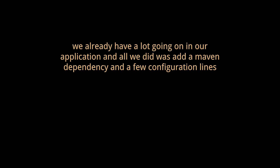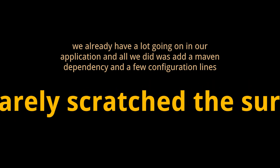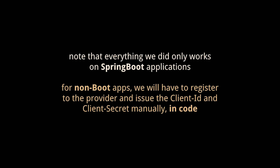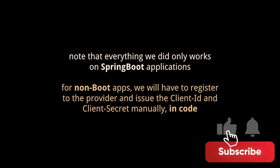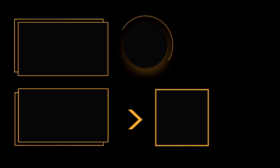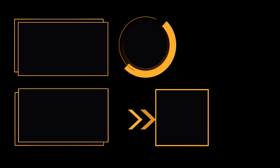We already have a lot going on in our application, and all we did was add a Maven dependency and a few configuration lines — so there is a lot we haven't covered yet and we've barely scratched the surface. Also note that what we did today works only on Spring Boot applications; for non-Boot apps we will have to register to the provider and issue the client ID and client secret manually in code. Let us know in the comments if you'd like a part 2 video diving into roles, permissions, and privileges. That's it for this video — I hope it was helpful, thank you for watching, take care and see you in the next one.